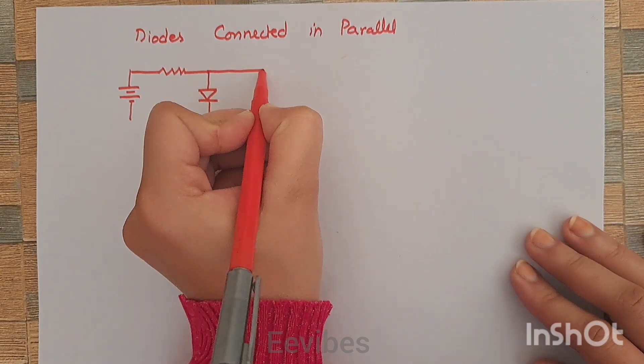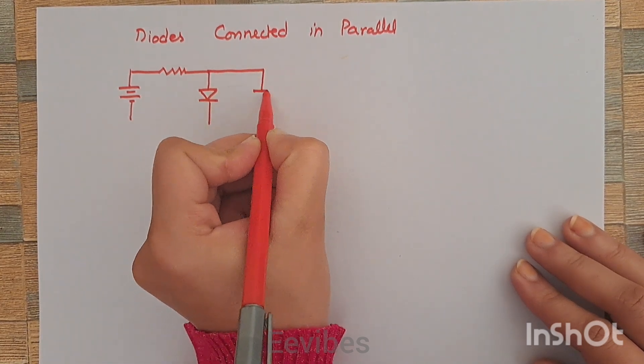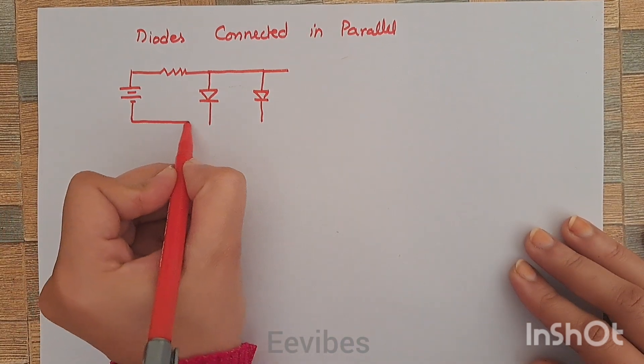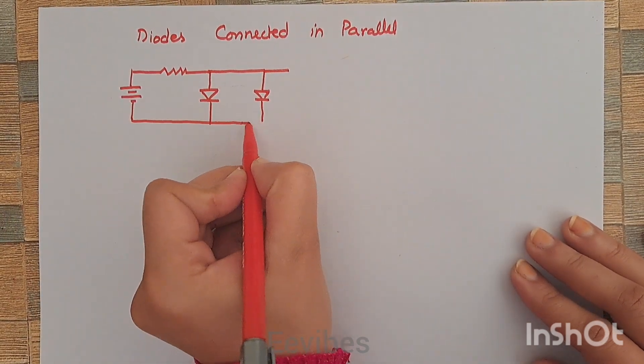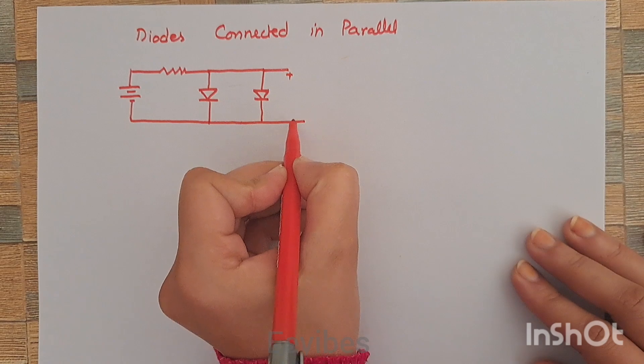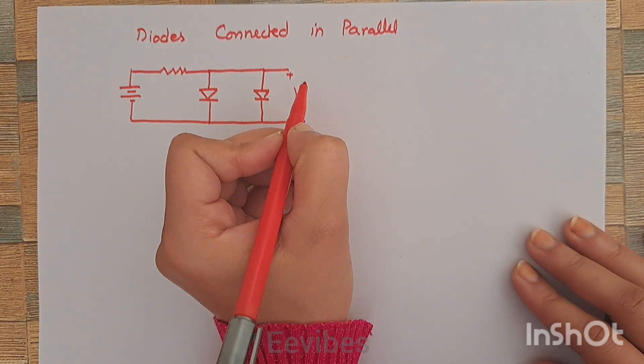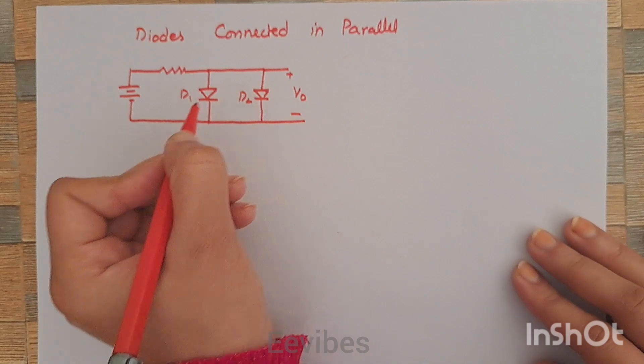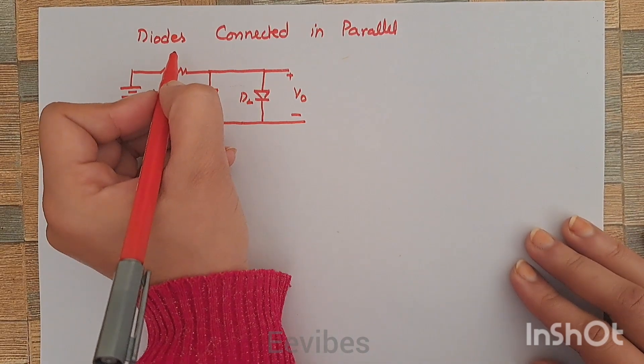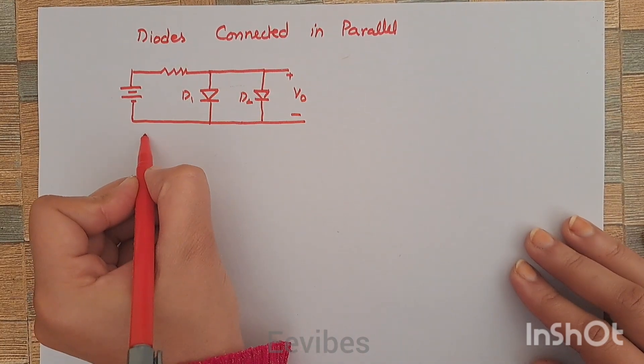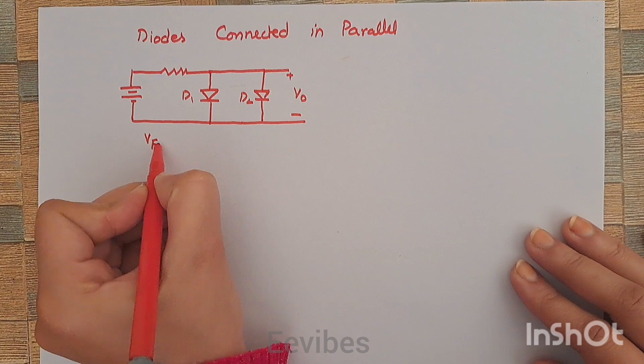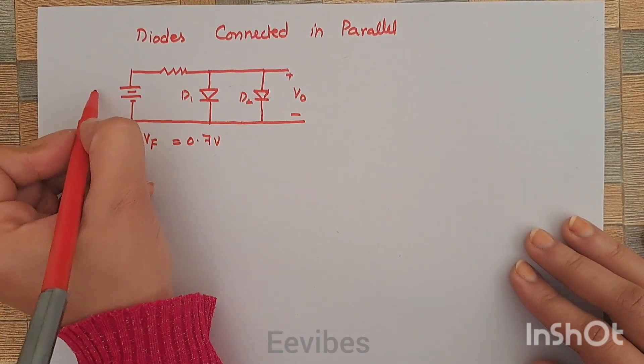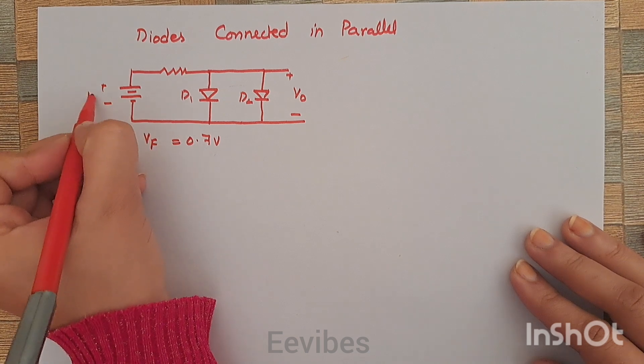The two diodes are connected in parallel. We're going to determine the output voltage at this point. Let's call it D1 and this is D2. Assuming that both diodes are silicon diodes, so when they're both forward biased, the forward voltage drop is equal to 0.7 volts.